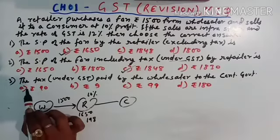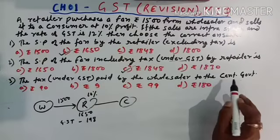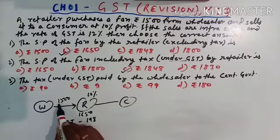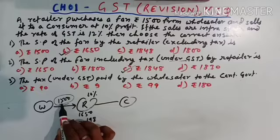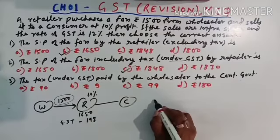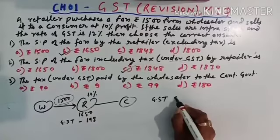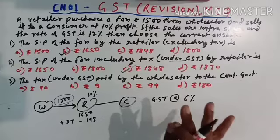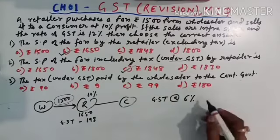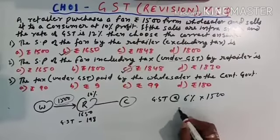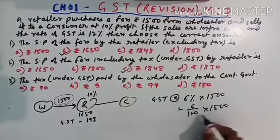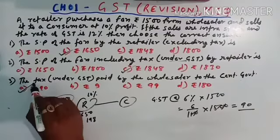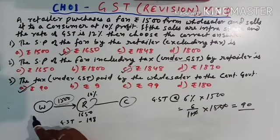The third question is, the tax under GST paid by wholesaler to the central government. Now you just find it out for how much amount the wholesaler is selling the fan, so the wholesaler is what, it will be 1500, so you just find out the central government taxes. So here GST, GST at the rate of 6% because you know that the tax is divided between central government and state government, so it would be 6%. So 6% of Rs. 1500, now you calculate 6 by 100, 1500, cancel this 0, so it would be 90 rupees. Now you see the answer, it's E number, this is the answer. This is the tax paid by whom, by the wholesaler.